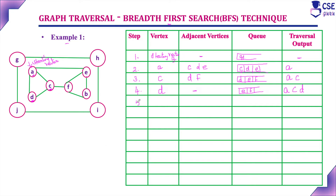The next vertex in the queue is E. We visit E and its adjacent vertices are A, F, and B. A is already visited. The remaining unvisited vertices adjacent to E are F and B. F is already in the queue, so we insert B into the queue and remove E. The traversal output is now A, C, D, E.